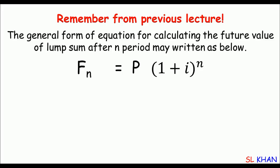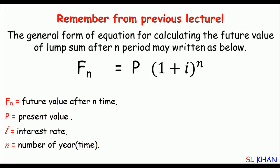We have already learned the future value equals P times (1 + i)^n, where F represents the future value, P represents the present value, i is the interest rate, and n is number of time periods or number of years.